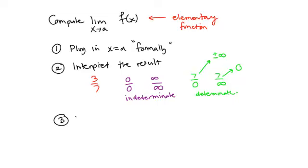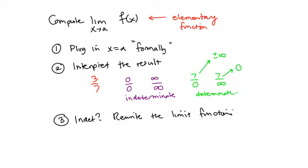The third step was: if given an indeterminate form, we had to rewrite the limit function. In Calc 1 that usually meant factoring or canceling, sometimes multiplying by the conjugate, sometimes using an obscure trig fact, or as we saw yesterday, using the L'Hôpital rewrite. Today I want to give you a list of which forms are indeterminate, which are determinant, and given the indeterminate forms, suggest useful rewrites.